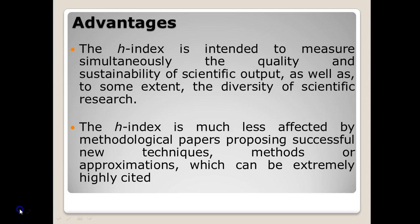The second advantage is that H-Index is much less affected by methodological papers. In certain areas where techniques, algorithms, approximations, and calculations are proposed, these types of papers are mostly cited compared to other empirical papers. However, it does not affect the H-Index value disproportionately, because H-Index requires an author to keep on publishing good research work. If an author has published one algorithmic paper whose citations keep increasing year by year, it is not going to increase the H-Index for that author.